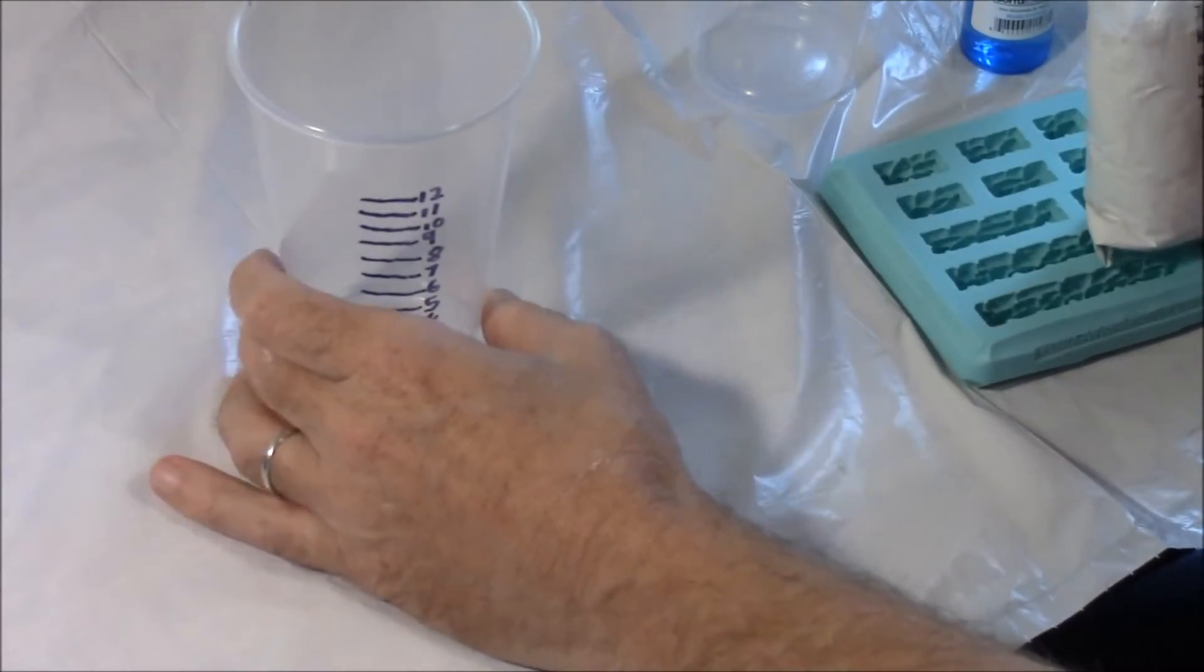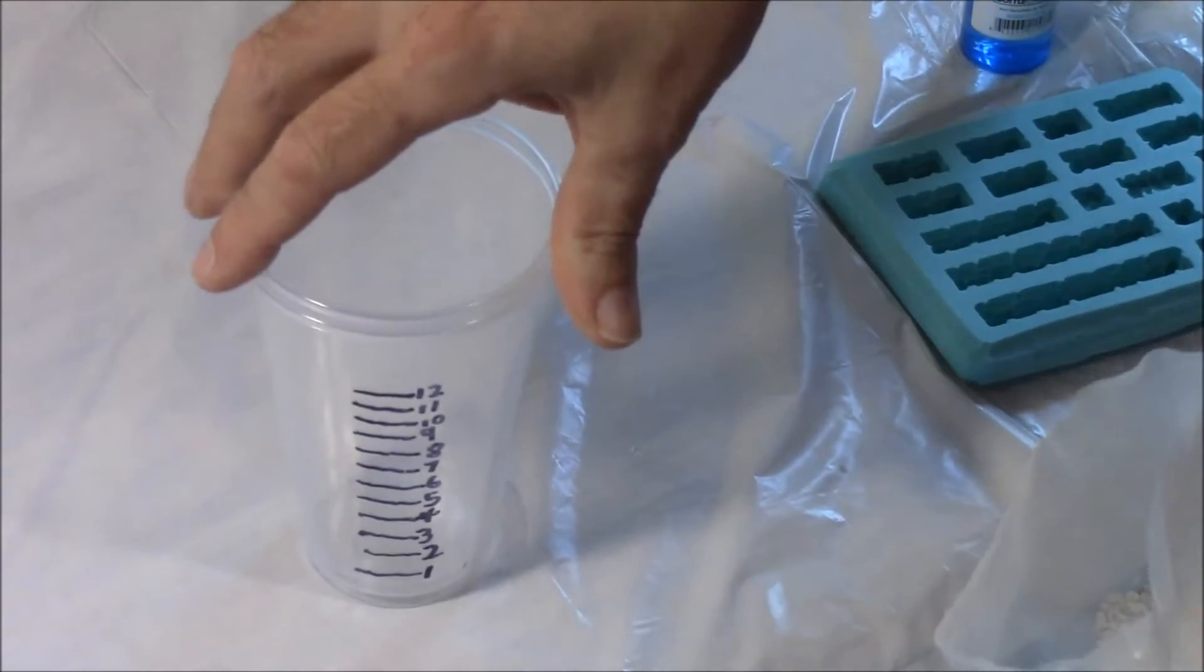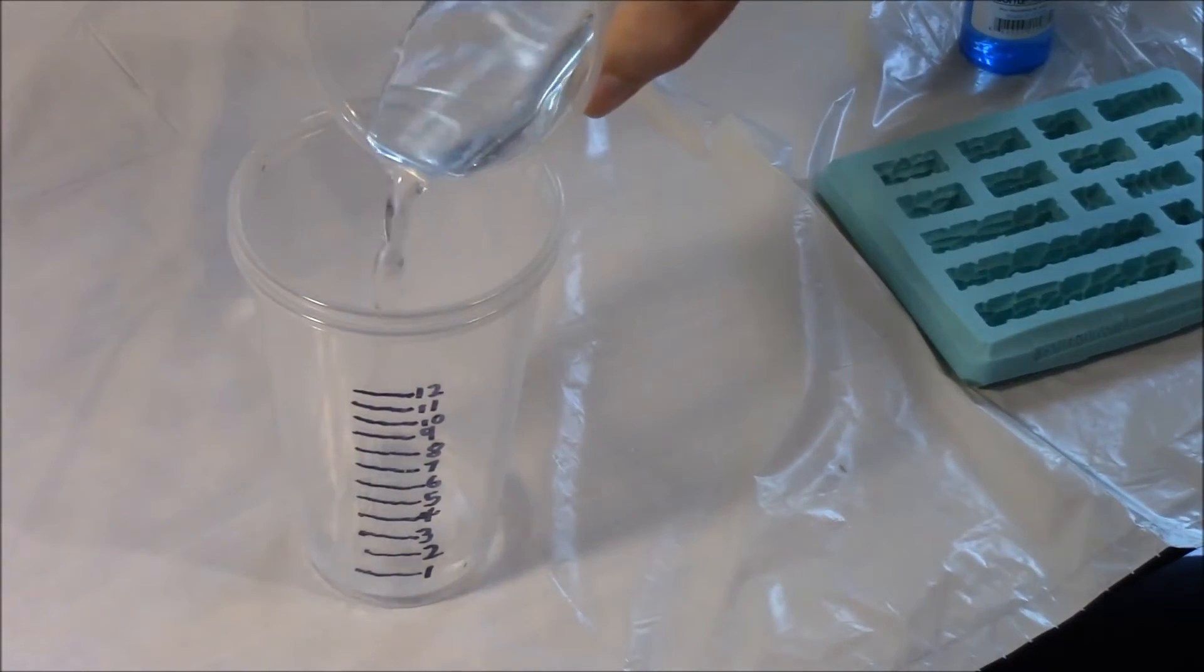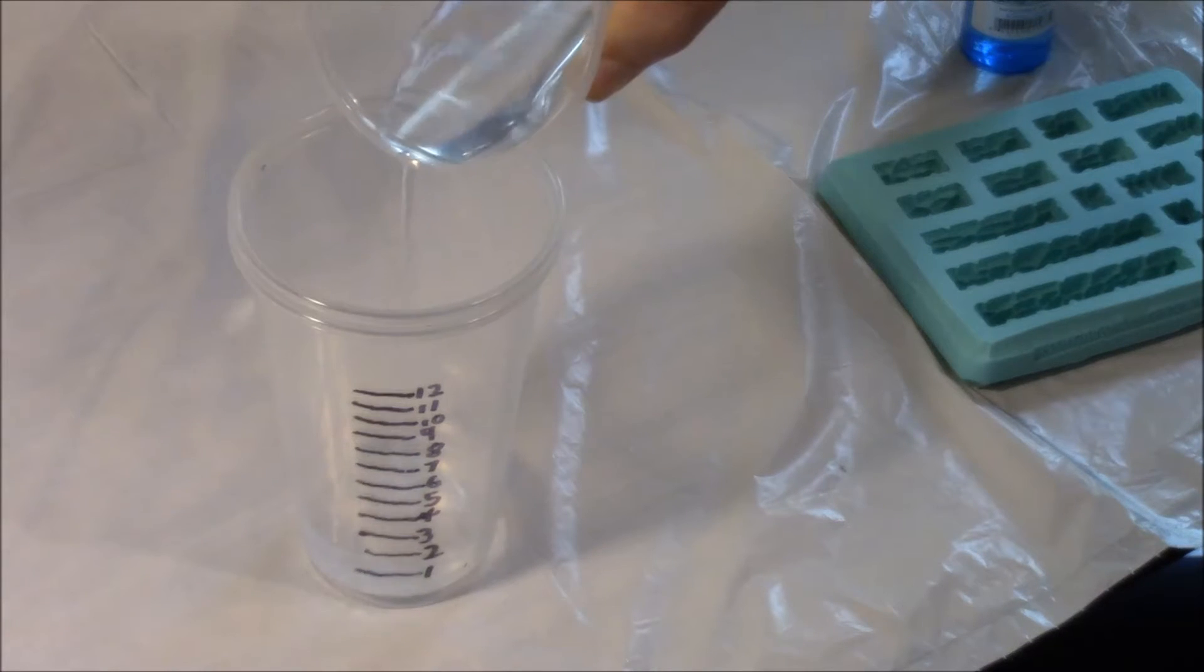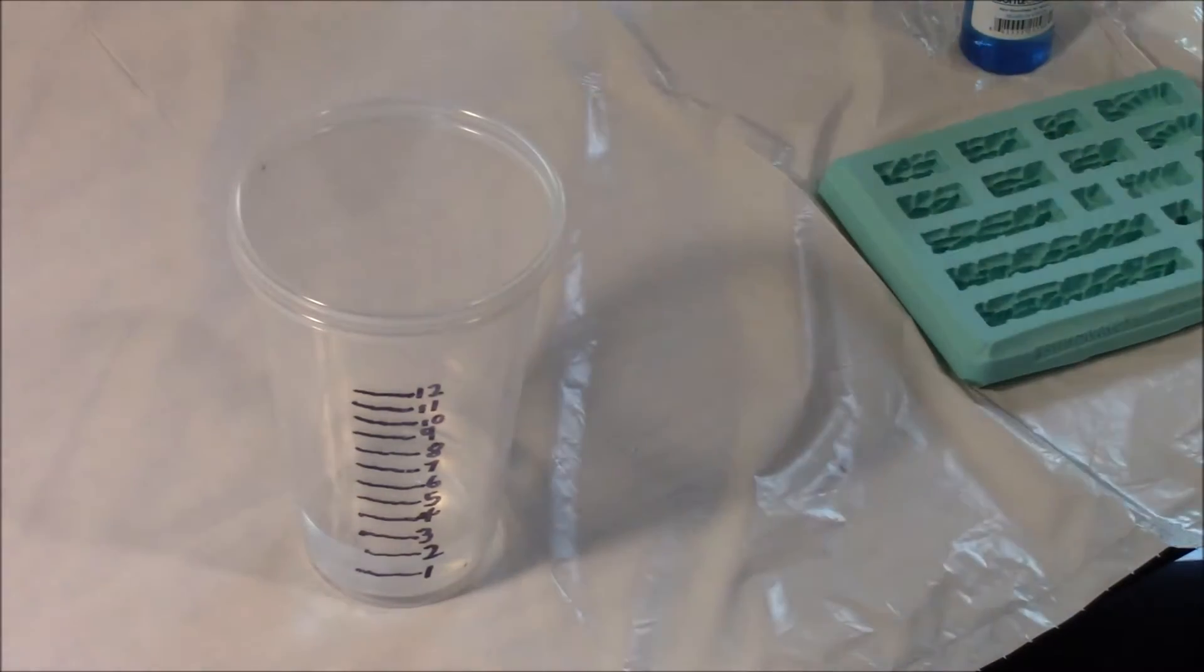We're going to get our measuring cup here, and what we're going to do is nest a clean cup inside of that, and we're going to pour in 2 ounces of water. And what I'm going to do is mix this by eye so you can see what it looks like when you mix it by eye. And then we'll compare it to the amount that's actually there after we add the powder to it.